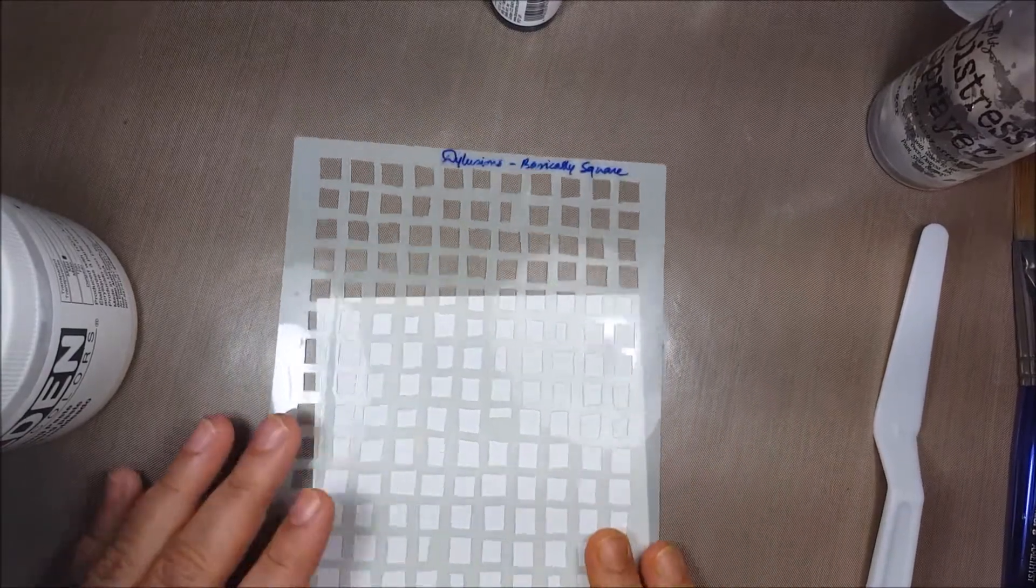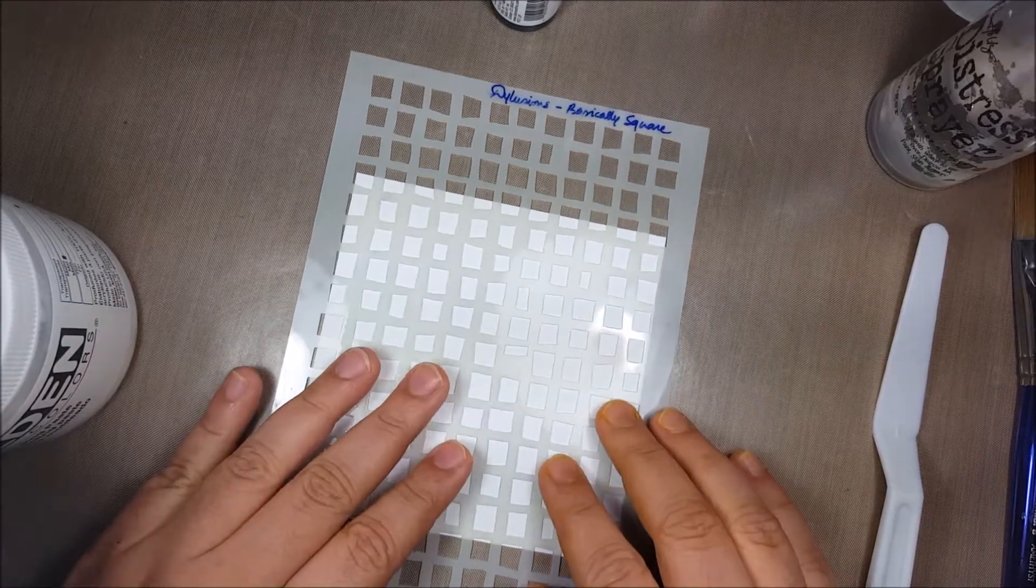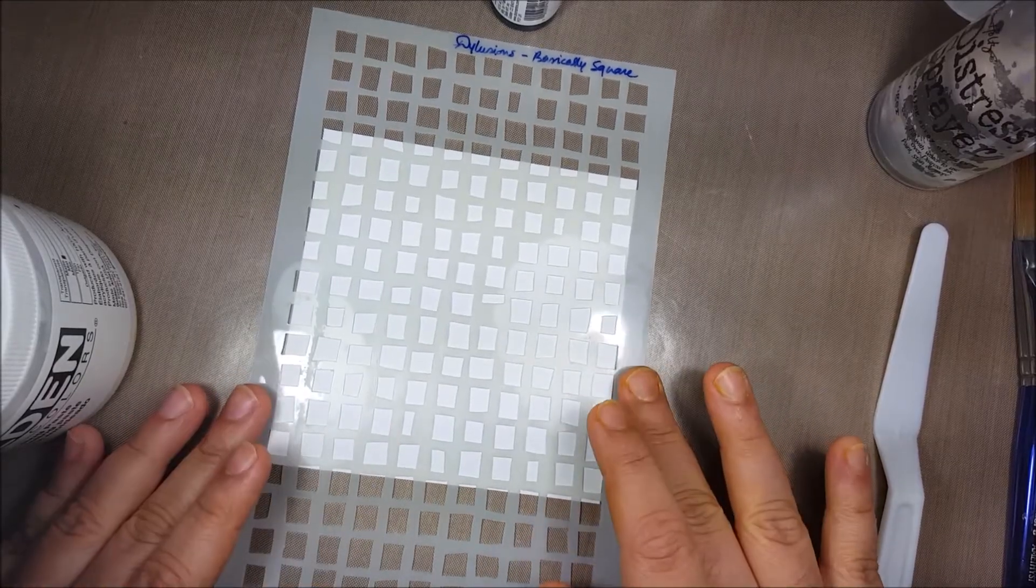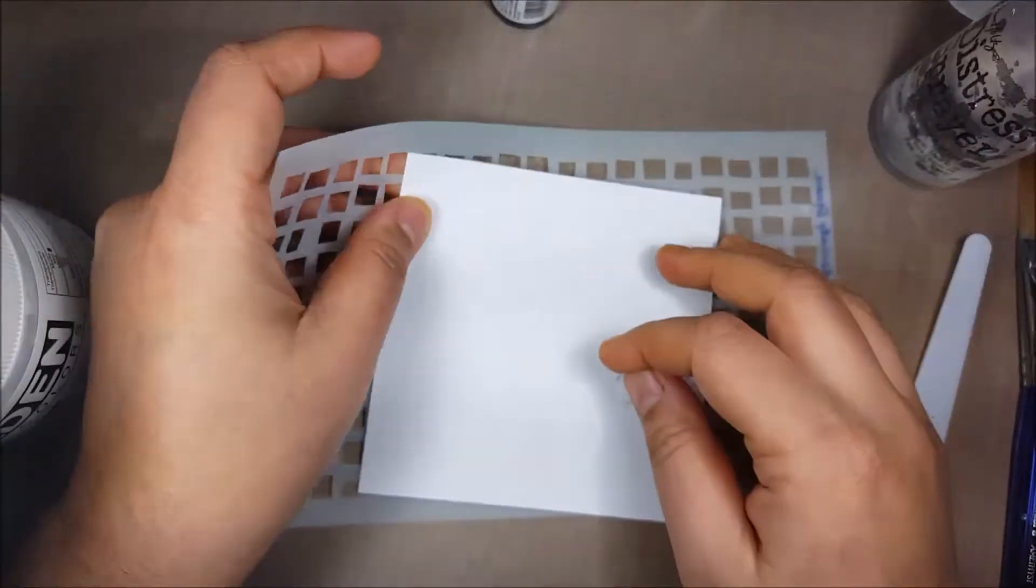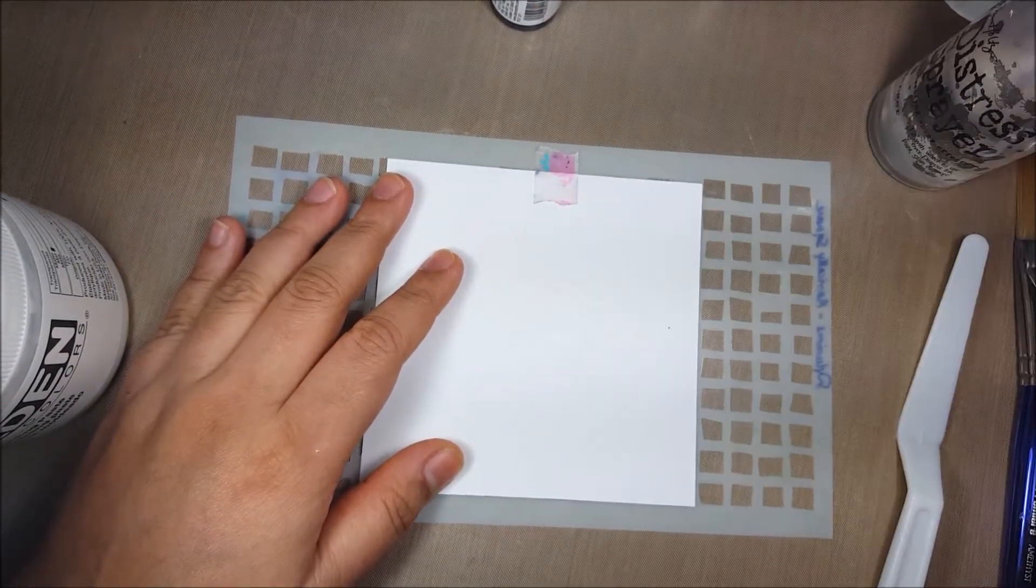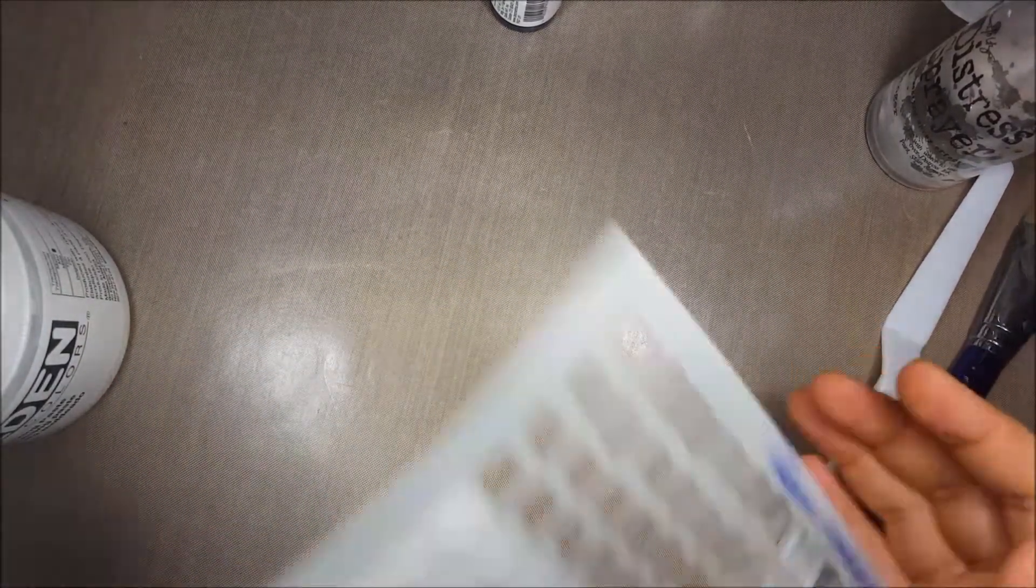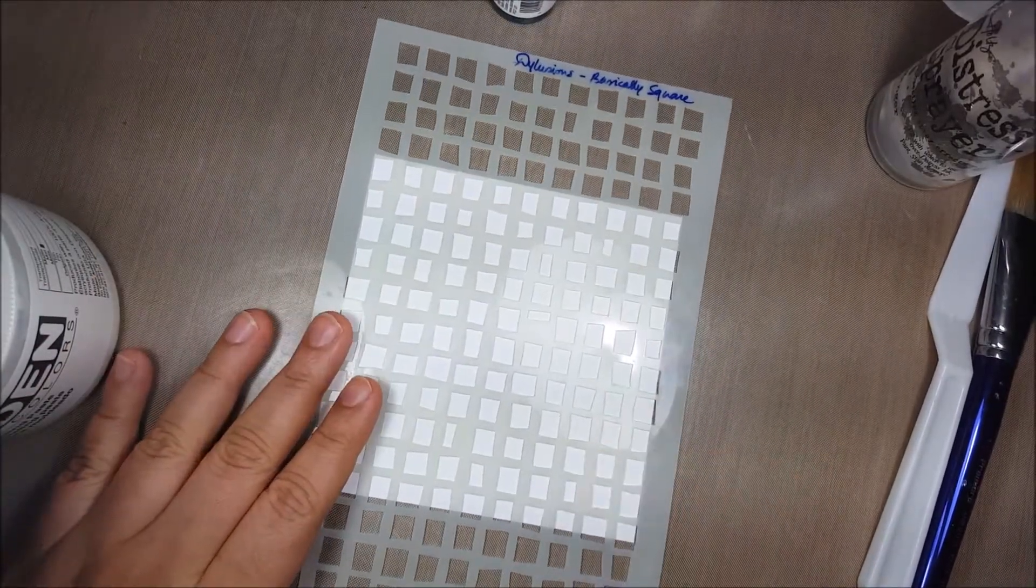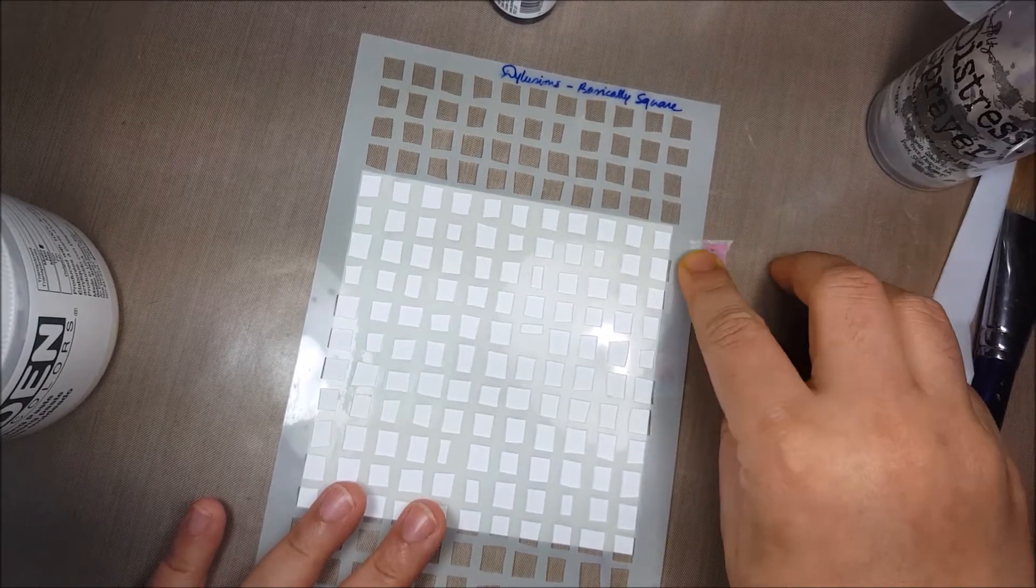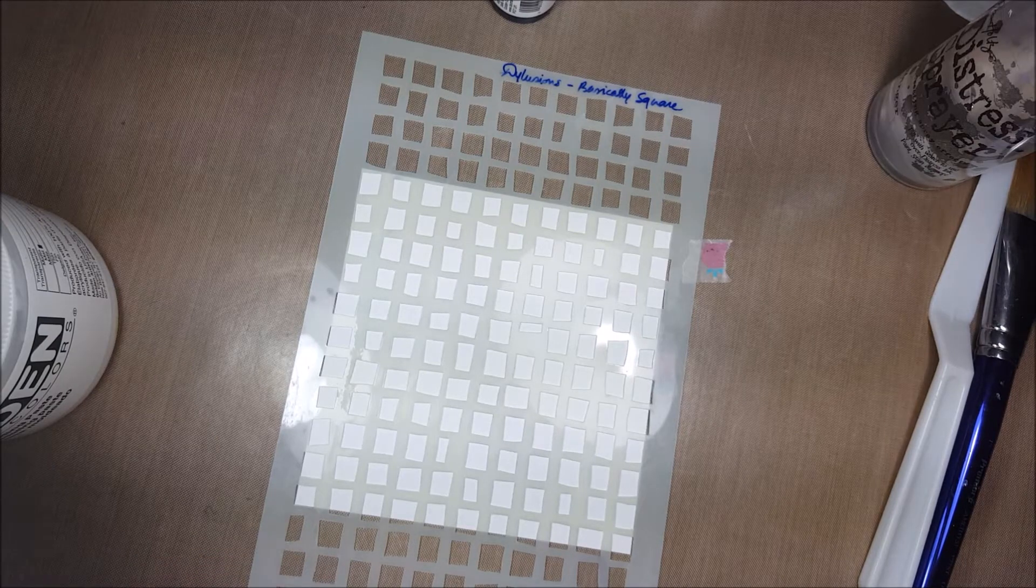Let's begin with embossing through a stencil. I'm placing the stencil onto the cardstock, turning the paper on top, and applying small pieces of washi tape onto the sides of the stencil so the paper doesn't move. To keep this entire thing in one spot on my craft mat, I'm putting two or three more pieces of washi tape onto it.